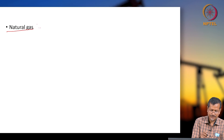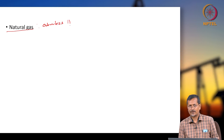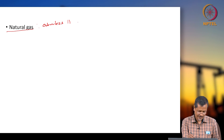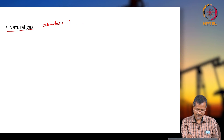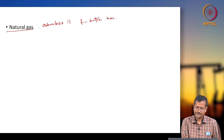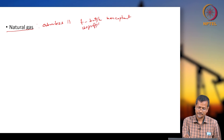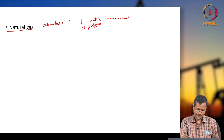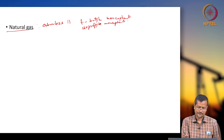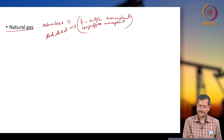Natural gas is actually odorless. But whenever you have a gas cylinder at home, it contains a certain smell. That is an added flavor — an added smell — called mercaptan, such as t-butyl mercaptan or isopropyl mercaptan. These are added odors for safety purposes.